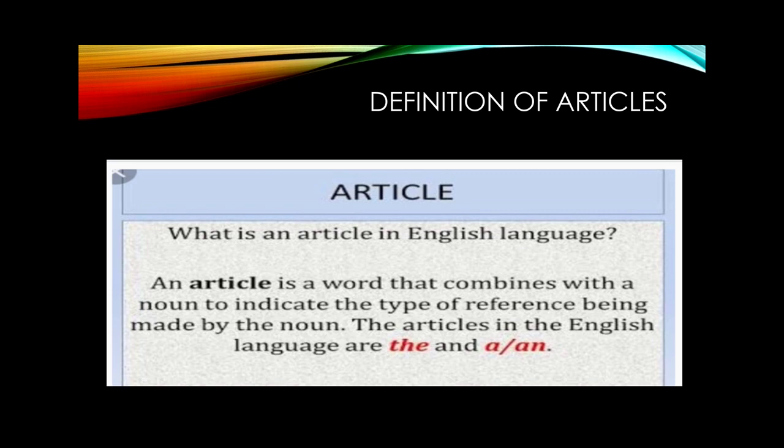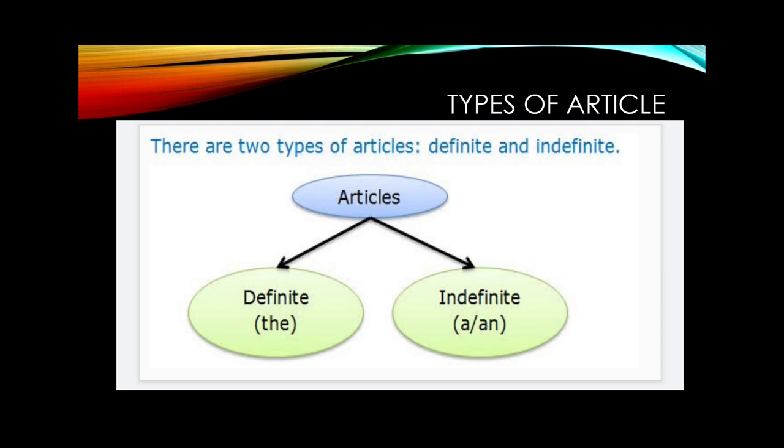Now let me tell you the types of articles. We can categorize the articles into two categories: definite article and indefinite article. The article which falls under the definite category is 'the', and the articles which come under the indefinite article are 'a' and 'an'. In today's class, we shall discuss the indefinite articles, which are 'a' and 'an'.